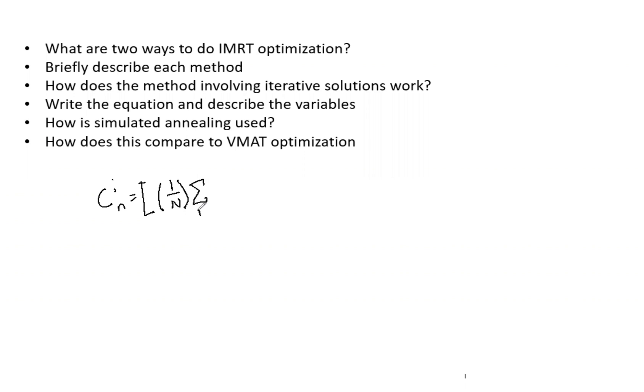So what are two ways to do IMRT optimizations? Briefly describe each method. How does the method involving iterative solutions work? Write the equation and describe the variables. How is simulated annealing used and how does this compare to VMAT optimization?